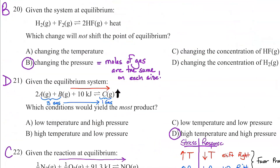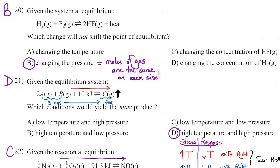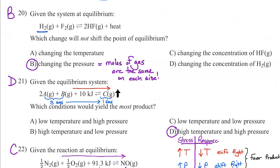Number twenty: which change will not shift the point of equilibrium? Count carefully: there is 1 mole of gas on one side and 1 mole on the other — 2 total equal 2. So changing pressure will not have an effect. Changing temperature definitely will shift it. Changing the concentration of HF or H2 will also shift it. The one that has no effect is pressure.